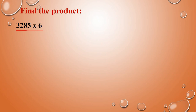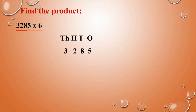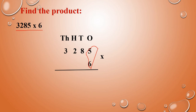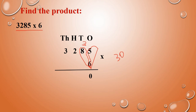This is also a four-digit number: 3,285 into 6. First you have to arrange in column form by place value. Now we are going to multiply. As usual, first you have to multiply with the ones place: 5 into 6 is 30. So write 0 and carry remaining 3 to the tens place.